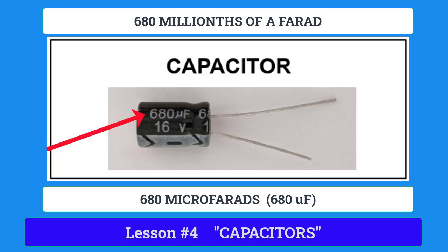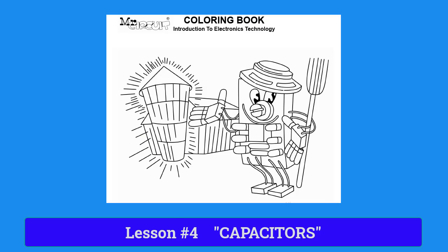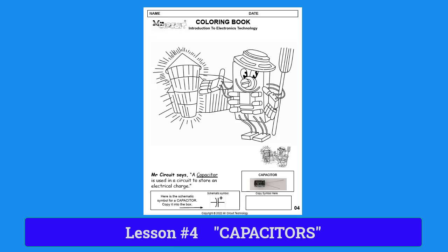On page 4, you see that the Mr. Circuit robot is holding a pitchfork and pointing to a barn. What the artist had in mind is that a capacitor stores electrons somewhat like a barn stores hay. What does a capacitor do in an electronic circuit? At the bottom of page 4, what does Mr. Circuit say?